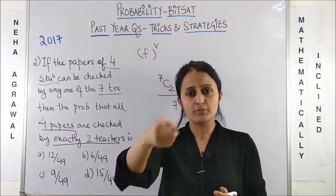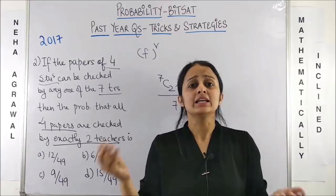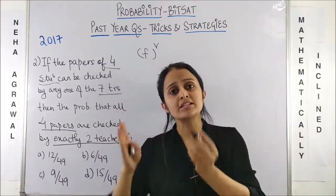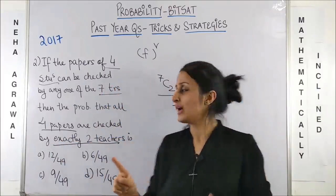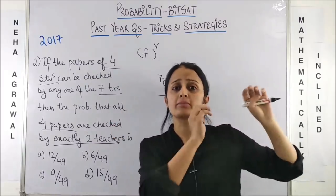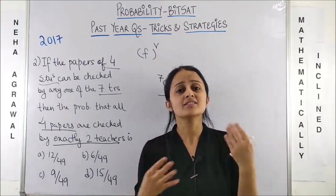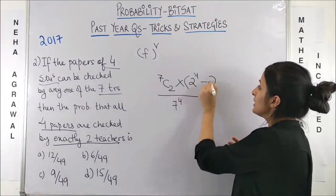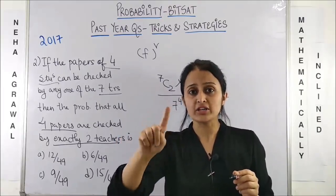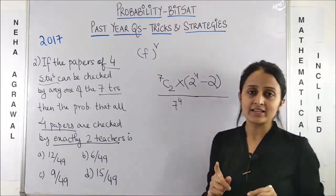So, you take the first paper, 2 options. Take the second paper, same thing. However, this also has the possibility that both the papers, teacher A corrects or both the papers, teacher B corrects. You don't want that to happen because you want that 4 papers are checked by 2 teachers. It should never happen that all the 4 are checked by any one of them. So, that means we have to subtract those cases where this repetition happens. So, minus 2. There are 2 such cases. Either all 4 papers are checked by teacher A or all 4 papers are checked by teacher B. So, you delete that case from here.